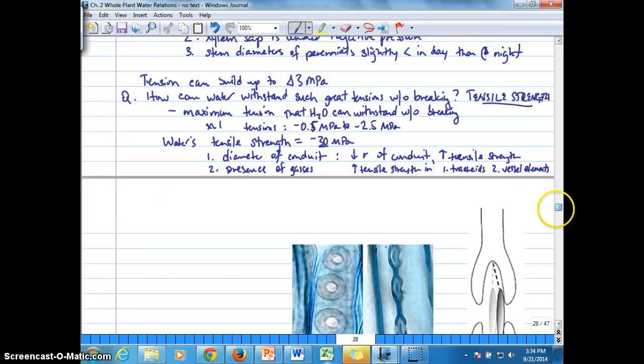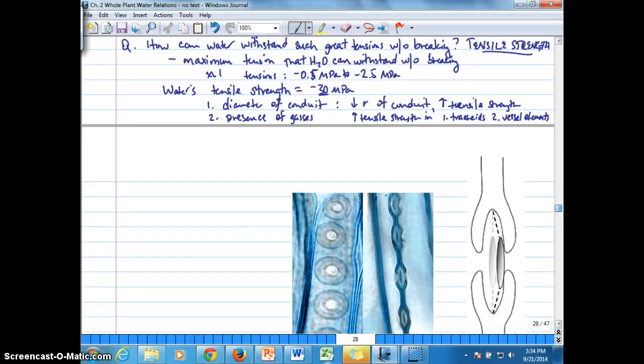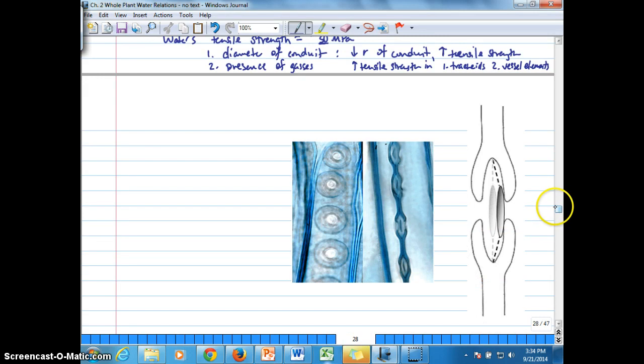All right, now the presence of gases becomes important. And there's bubbles that can be present in the water column formed by carbon dioxide, nitrogen gas, and oxygen gases. And the gases tend to break up the hydrogen bonds between water molecules, which then reduces the cohesion and therefore the tensile strength in the water column.